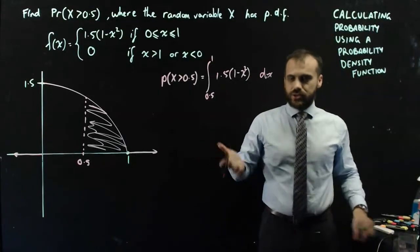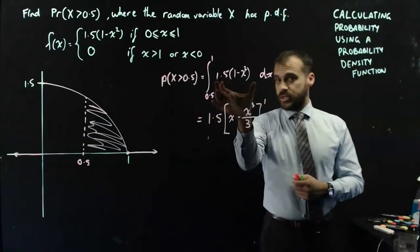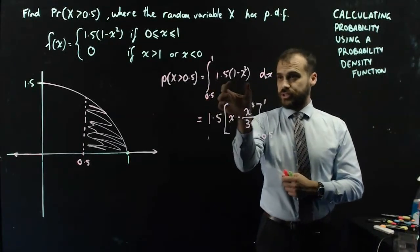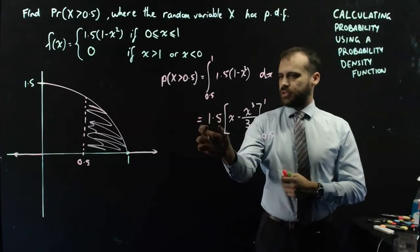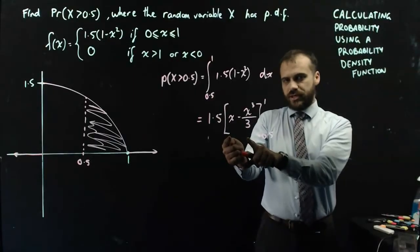And now you already know how to integrate, so I'm not going to teach you how to integrate again. Now what is worth noting is that this particular function is being multiplied by 1.5, the whole function is. So you can bring the 1.5 out the front and then just integrate what's in the brackets.